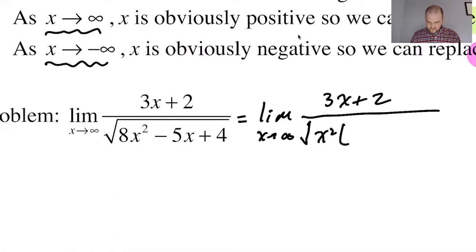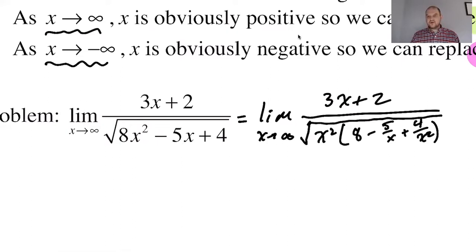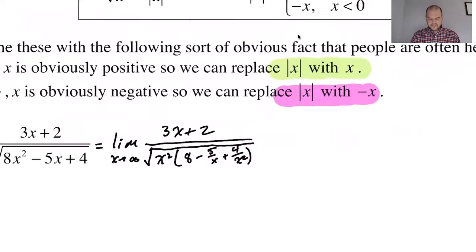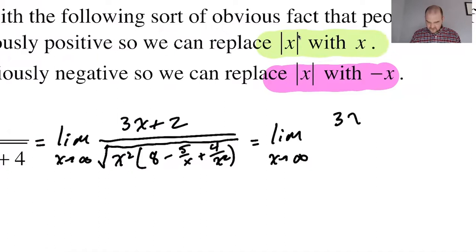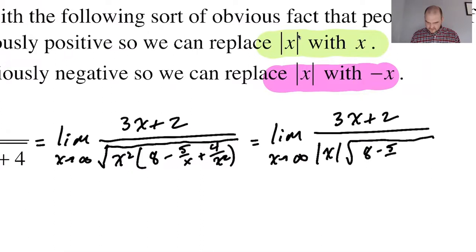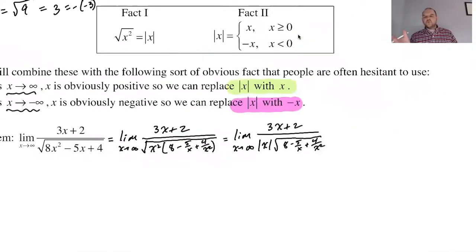Taking x squared out of everything inside the radical, I get: the limit as x approaches infinity of (3x + 2) over the absolute value of x times the square root of (8 − 5/x + 4/x²). I used the property that √(a·b) = √a · √b, and that √(x²) = |x|. The work is basically the same every time — once you know what to do, it's what you will do.